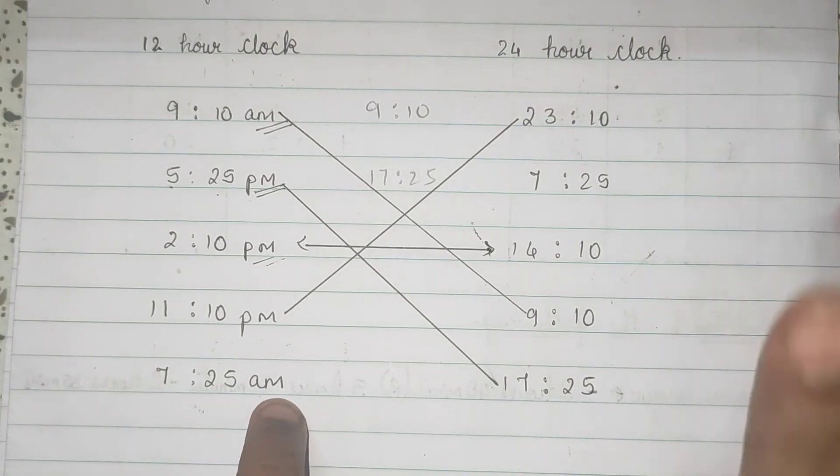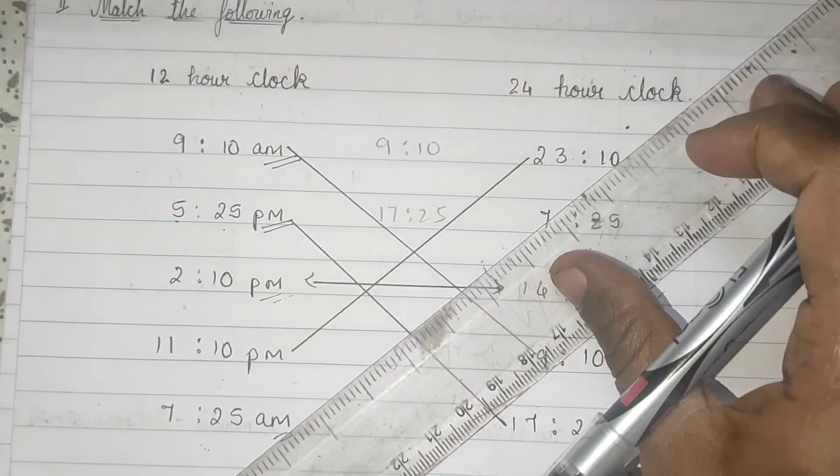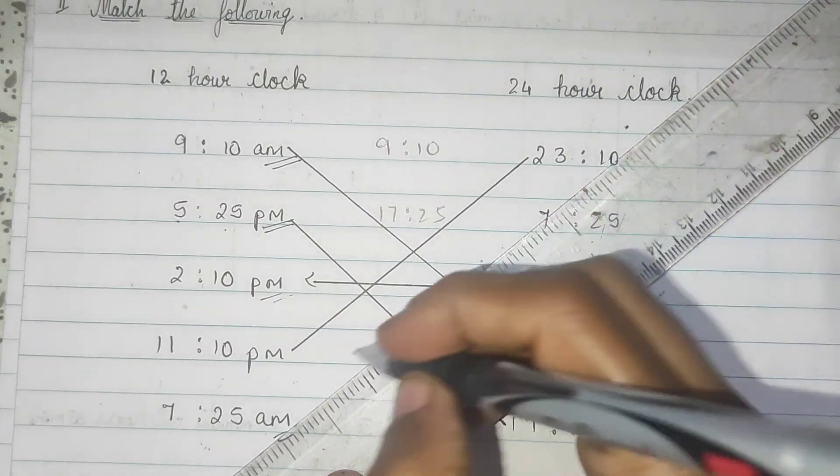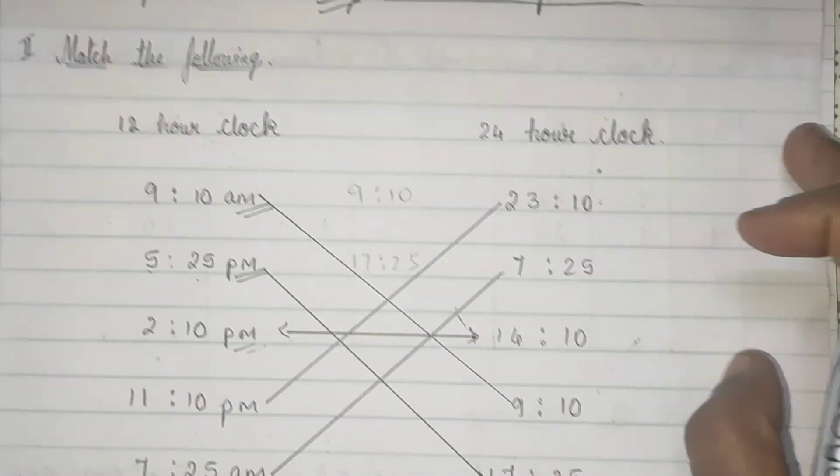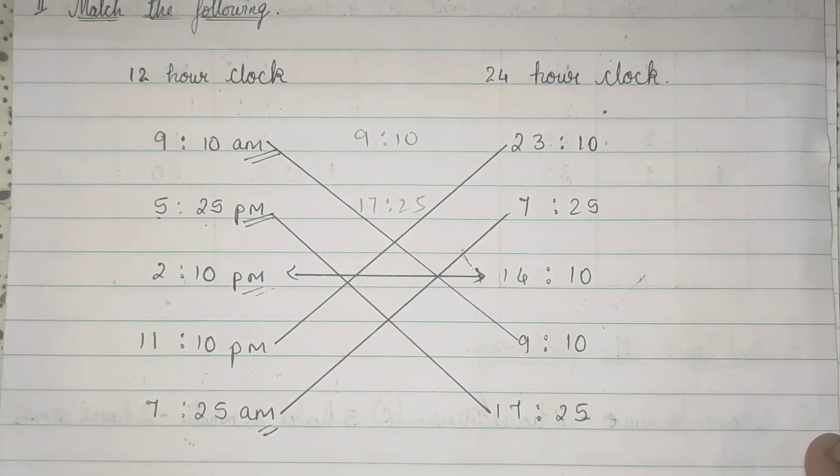7:25 a.m. A.m. means morning. So, 7:25 a.m. This is the answer. 7:25 a.m.